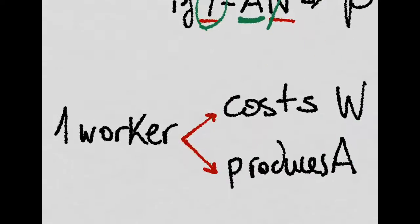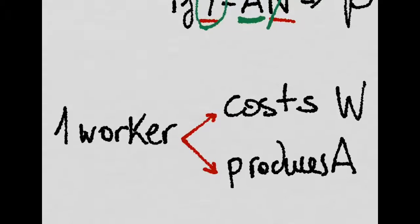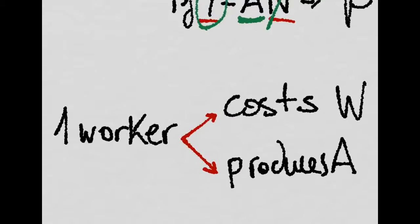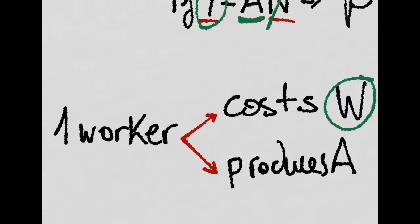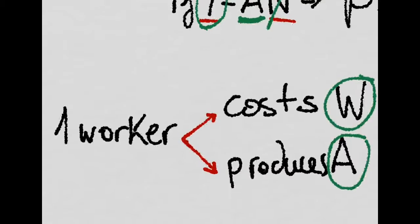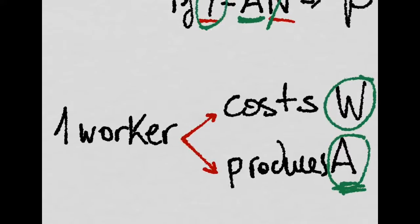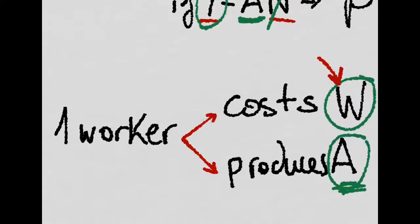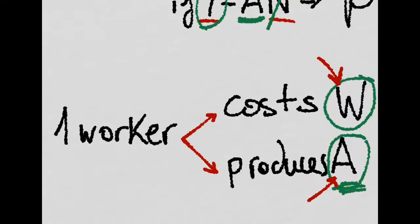When firms make a decision about hiring a new worker, they not only look at the nominal cost of paying him, which is just his wage, but they also look at how many units of output this worker is going to produce. That's A, and that's how productive that worker is going to be. So firms really look at relative costs, what you pay when you hire a new guy, and what you get in terms of output for hiring this guy.